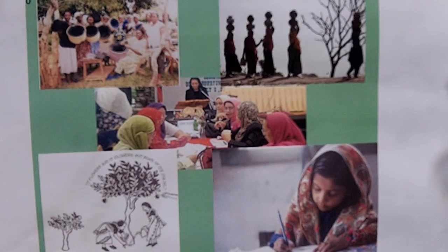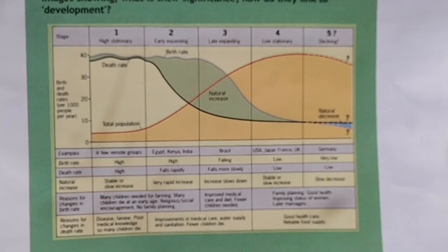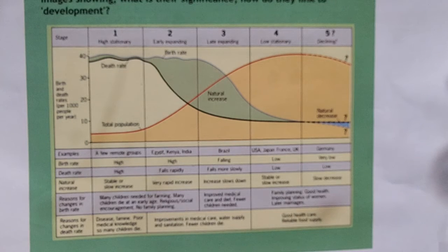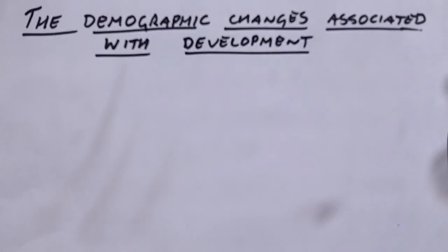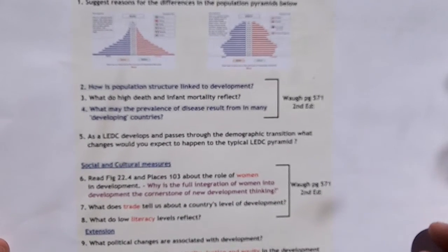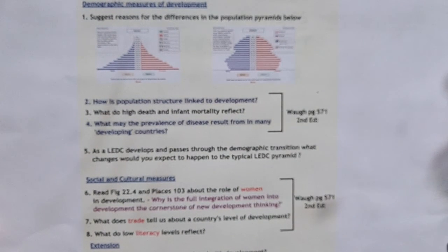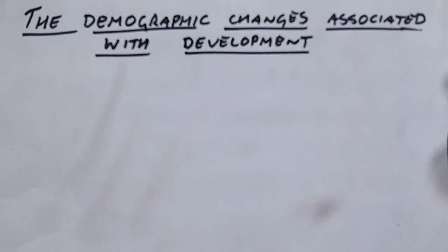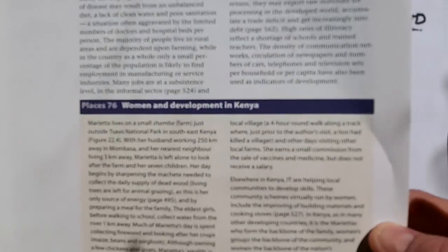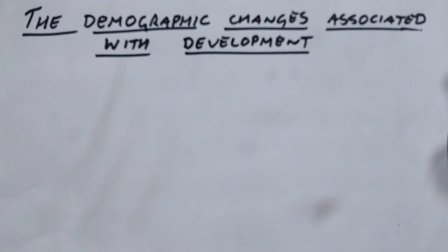Those are the basic demographic changes associated with development that go alongside the demographic transition model. I'd recommend having a look at the AS video in the population playlist to fully familiarise yourself with this again. After watching this video, have a go at the questions in the lesson on demographic changes associated with development. You might also want to take away a copy of the relevant textbook page — I think that's the Waugh textbook page 571. Completing that task will bring you fully up to speed, and covering these basics means we can move on to more advanced ideas in class.